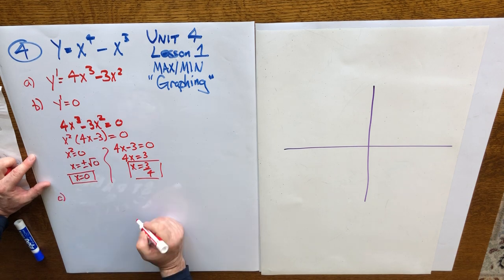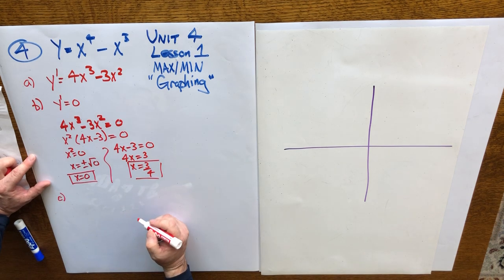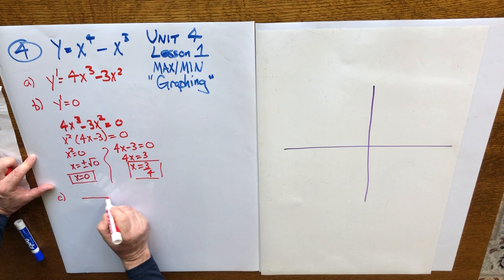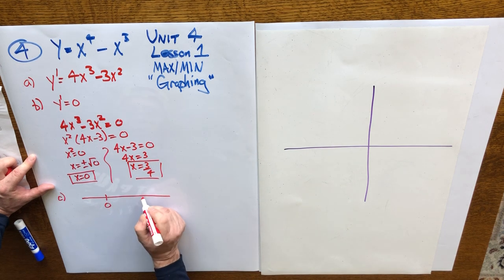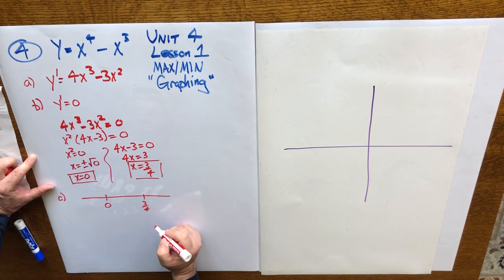Step letter C is to make the first derivative chart to determine which point is a maximum or a minimum or neither. So let's make a number line by placing our two values, 0 and 3 quarters, creating three intervals.